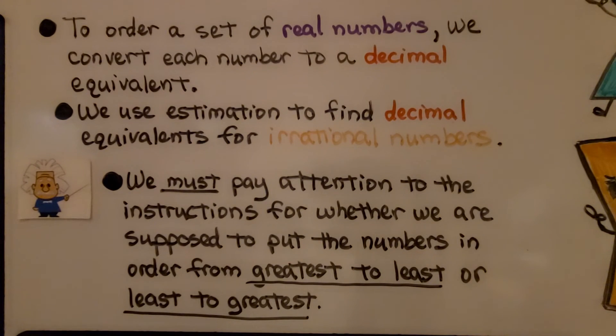To order a set of real numbers, we convert each number to a decimal equivalent. We use estimation to find decimal equivalents for irrational numbers. We must pay attention to the instructions for whether we are supposed to put the numbers in order from greatest to least or least to greatest.